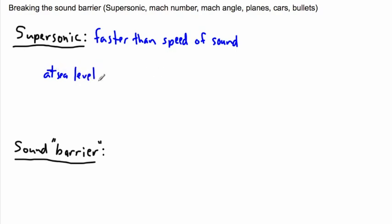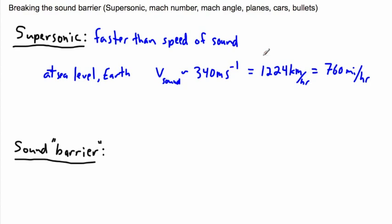It turns out the reason is because it depends on density and pressure, temperature and all sorts of other effects. But at sea level the speed of sound, V sound, is approximately 340 meters per second. If you want to convert that it's roughly 1224 kilometers per hour, or about 760 miles per hour.